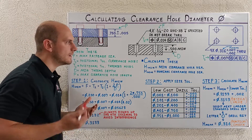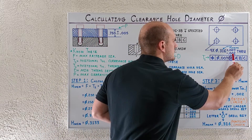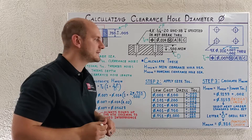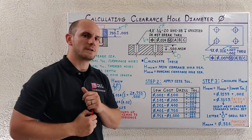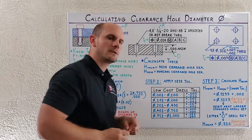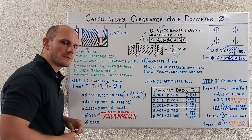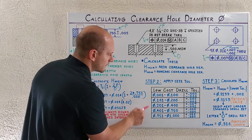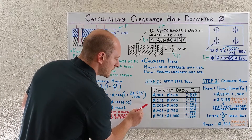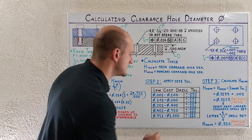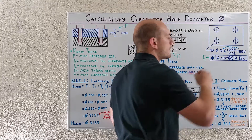For step two, we need to begin building our clearance hole call-out by applying a size tolerance. I've created a low-cost drill tolerance table with easily repeatable tolerances. All you need to do is take your minimum clearance hole diameter and plug it into the appropriate range. In this case 0.3133 falls between 0.201 and 0.400, so we take the plus 7, minus 2 tolerance and plug it in as our size tolerance for the clearance hole call-out.